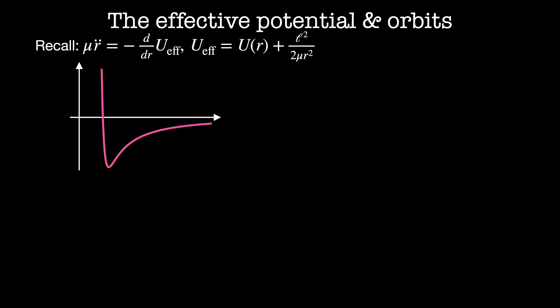The equation of motion for these systems is given by mu r-double-dot equals minus d/dr of the effective potential, where the effective potential is given by the central potential plus the angular momentum squared divided by 2 mu r squared, where mu is the reduced mass.